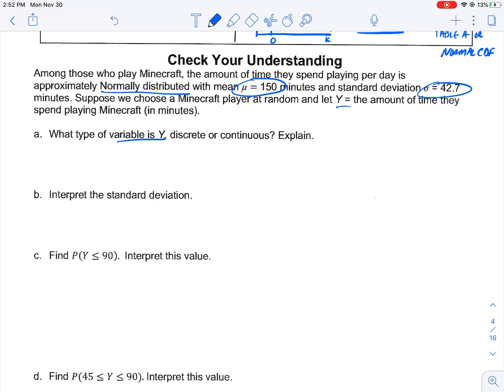So, what type of variable is Y? Discrete or continuous? Think about this. Y is the amount of time. Time is going to be a continuous variable because any value from 0 to 1,440 minutes, which is 24 hours, can be spent playing Minecraft.